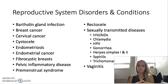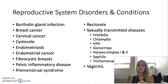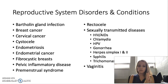Next we have premenstrual syndrome, known as PMS. This is a real disorder — cramping, irritability, all those symptoms associated with PMS, that is all real. It is a little bit different patient to patient. Rectocele is herniation of the posterior wall of the vagina with the anterior wall of the rectum, so that's where the rectum is actually going into the vaginal canal.